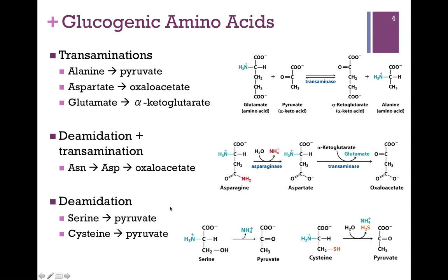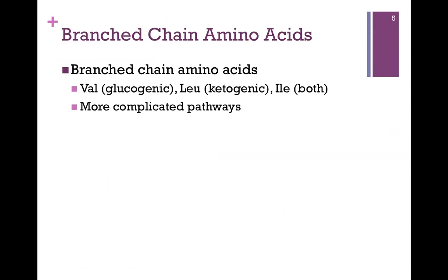So let's look at those intermediates a little bit more closely. They include pyruvate, alpha-ketoglutarate, and oxaloacetate — all of them citric acid cycle intermediates. They can all be used to synthesize glucose in gluconeogenesis by the liver.